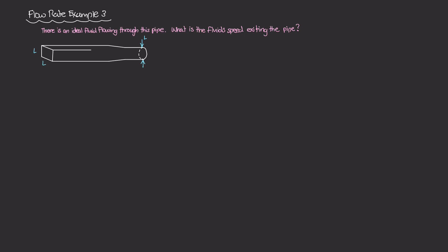Now, because this is an ideal fluid, we know that the flow rate Q, which is meters cubed per second, that's the unit of flow rate, that is going to be constant all throughout the system. So whatever volume of fluid is entering the pipe is also leaving the pipe.